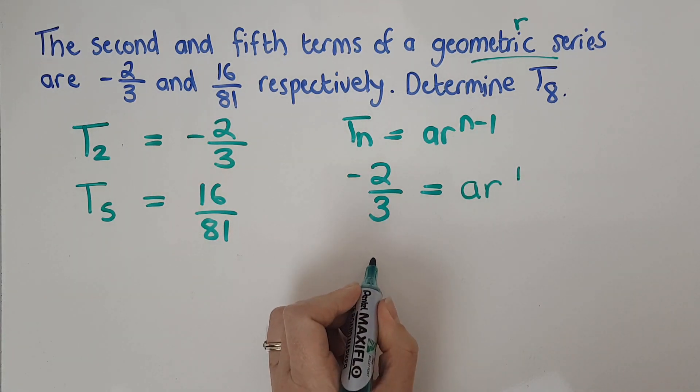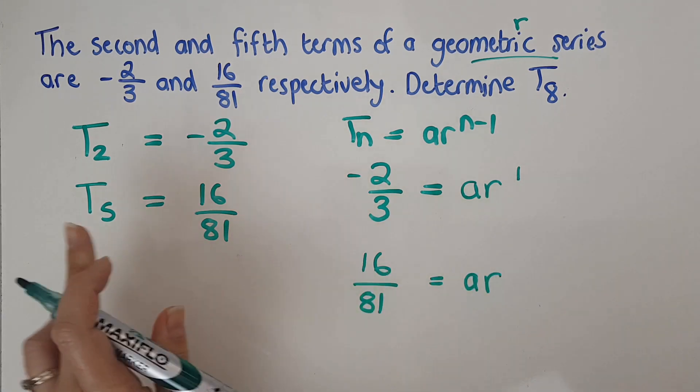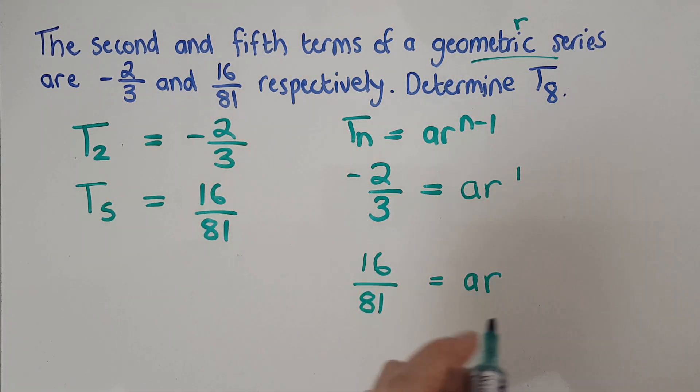Then for the next one, I've got 16 over 81, and that equals AR to the five minus one, which is four.